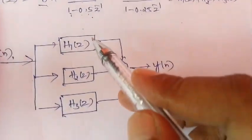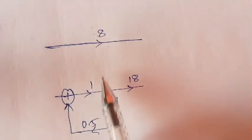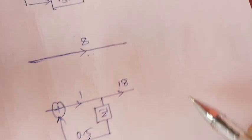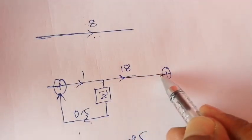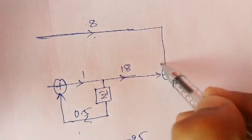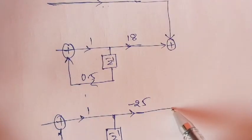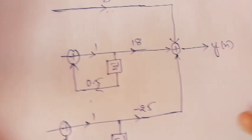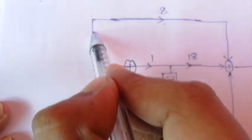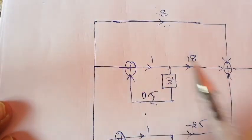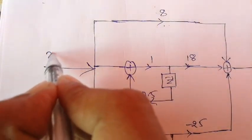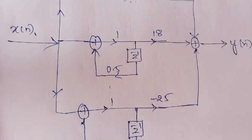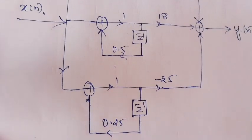Here I have realized each system function — H1(z), H2(z), and H3(z) — separately in terms of DF2. We add all three outputs, applying input x(n), to get y(n). This is the parallel realization of the given IIR system function. Thank you.